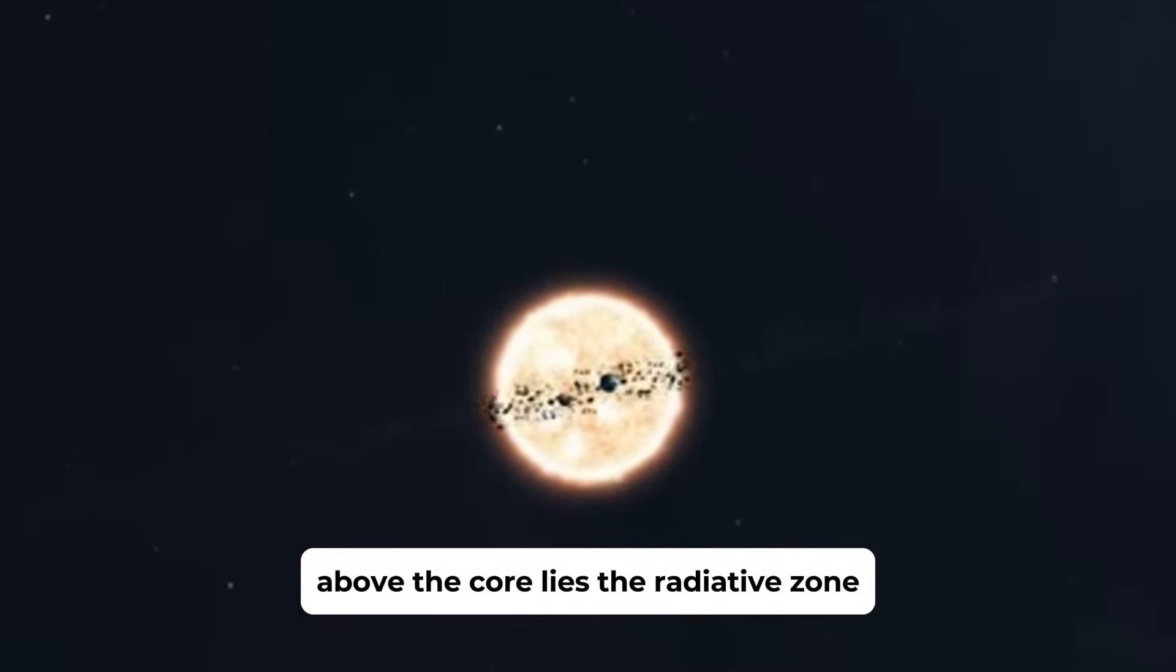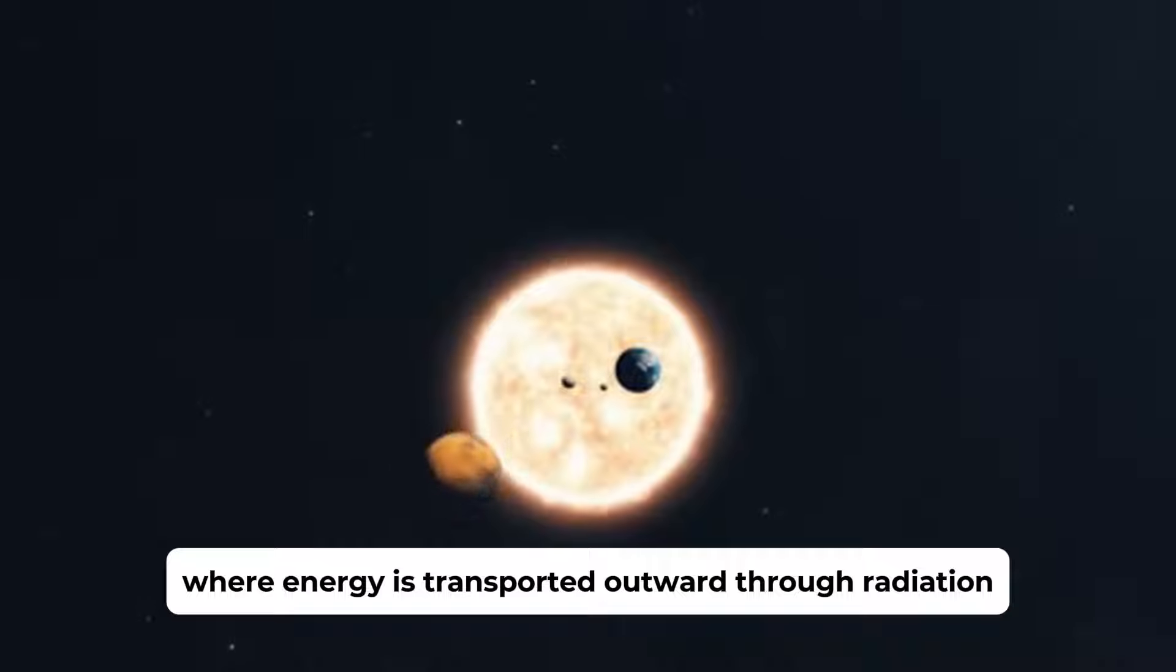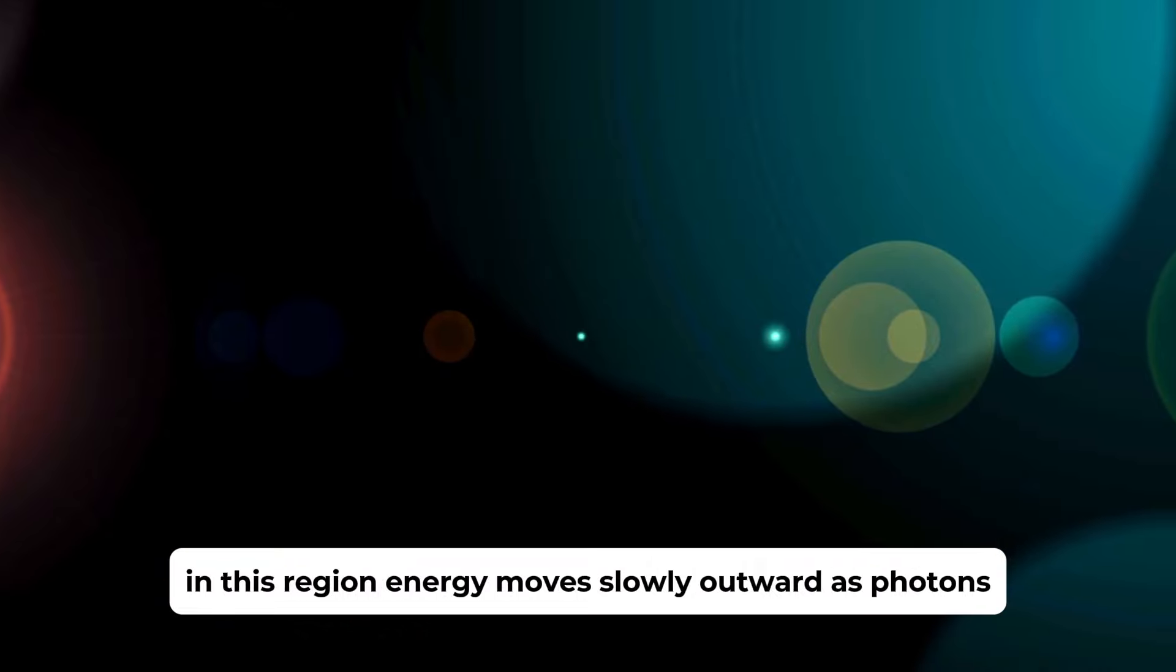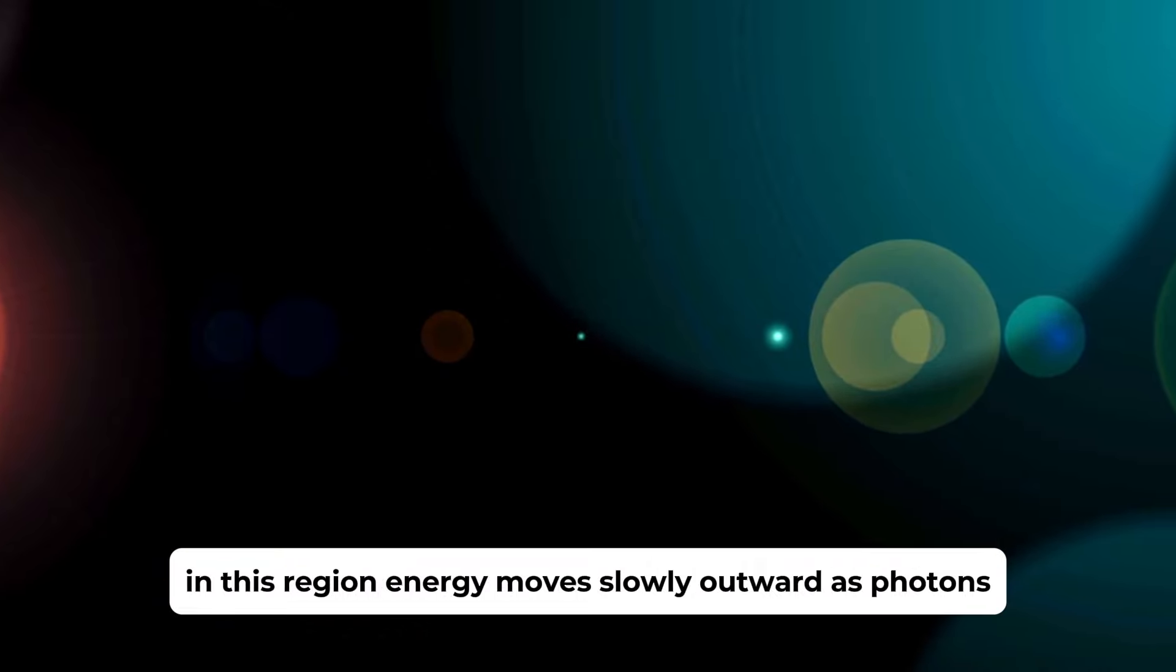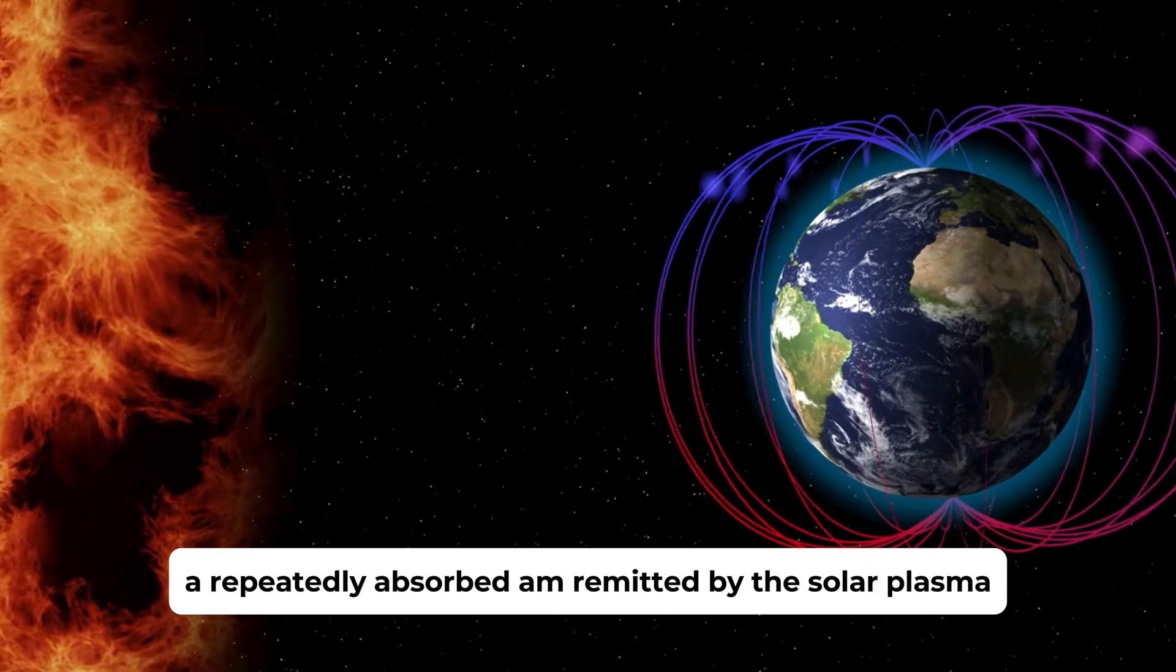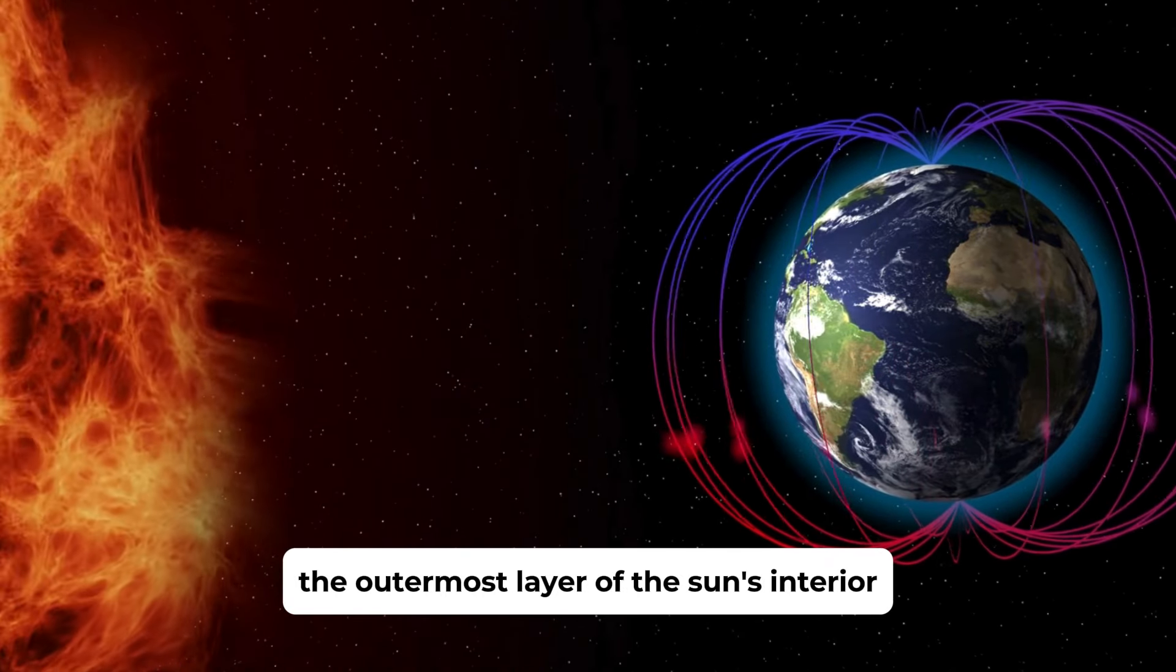Above the core lies the radiative zone, where energy is transported outward through radiation. In this region, energy moves slowly outward as photons are repeatedly absorbed and re-emitted by the solar plasma.